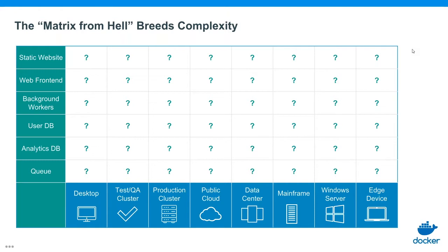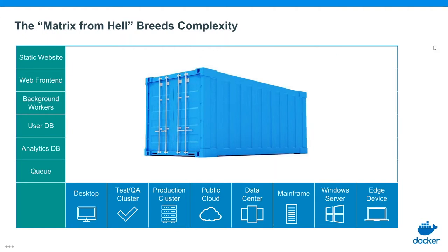So we end up in this matrix. Enterprises are being asked to deploy more and more applications and to deploy them in more and more places. The question becomes: how can we start to standardize our applications, standardize our deployment processes, and standardize our devices, so we don't have to worry about packaging everything differently for every environment? That's exactly where Docker and containers come in.